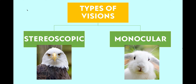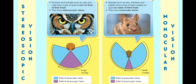Meanwhile, monocular vision is a vision that uses both eyes but separately. Humans and animals such as cats and owls have a pair of eyes located in front of the head; hence these animals have stereoscopic vision.